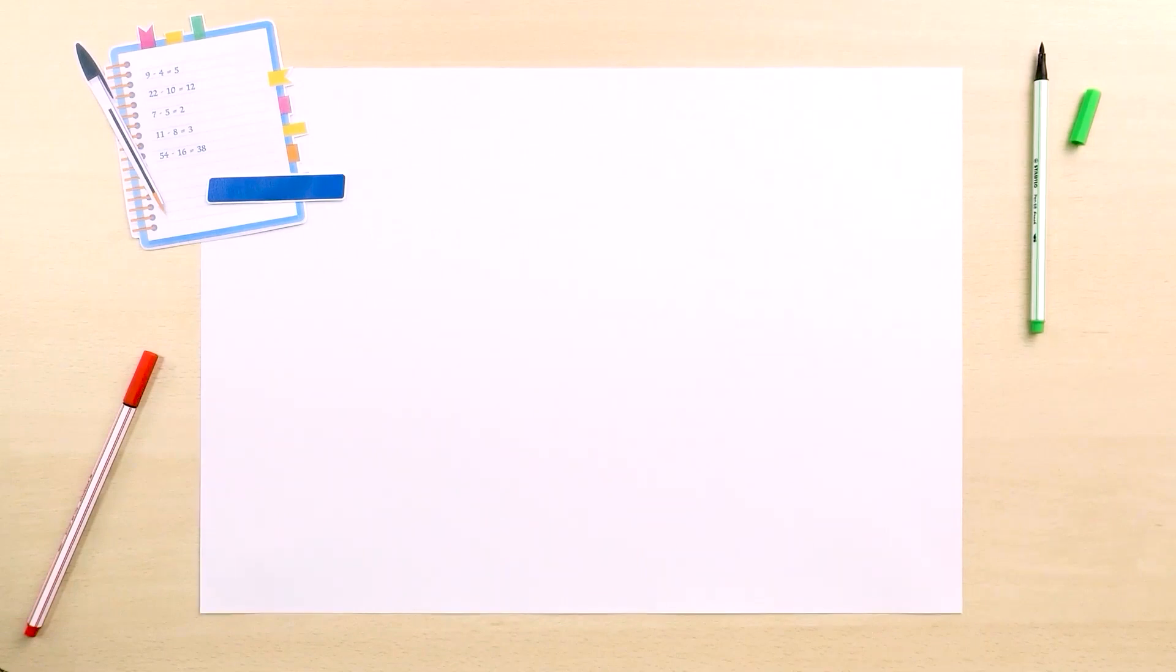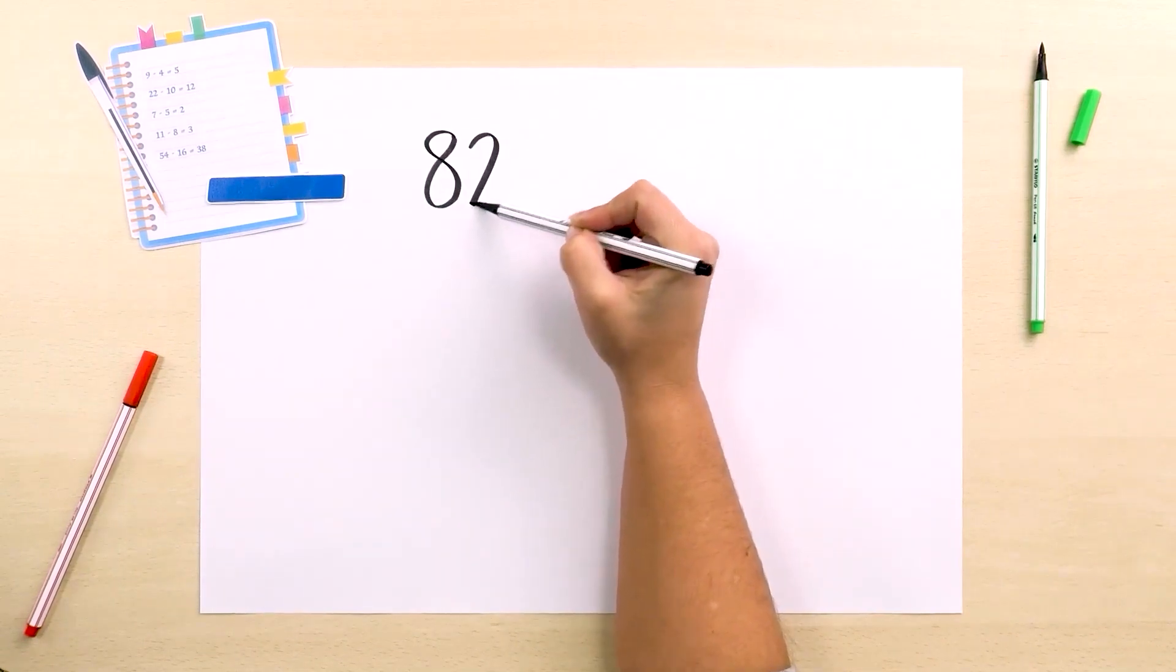Let's solve the final example without using material, by representing it. 82 minus 45.